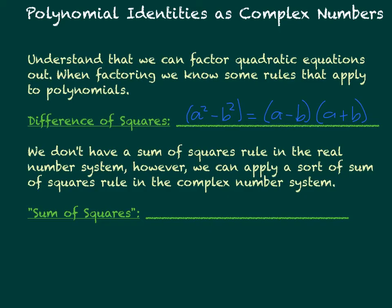We don't technically have a sum of squares rule in the real number system. However, we can apply a sort of sum of squares rule to the complex number system.